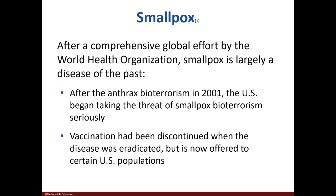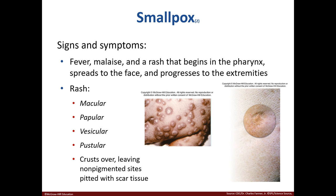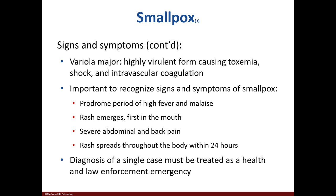Smallpox is a disease that luckily we don't have to worry about, as it has been eradicated. Signs and symptoms involve fever, fatigue, and a rash that starts off in the throat and then spreads. It works its way from a macular rash to a pustular one. The etiological agent is the variola major virus. Patients may also experience abdominal and back pain, and within 24 hours the rash spreads.